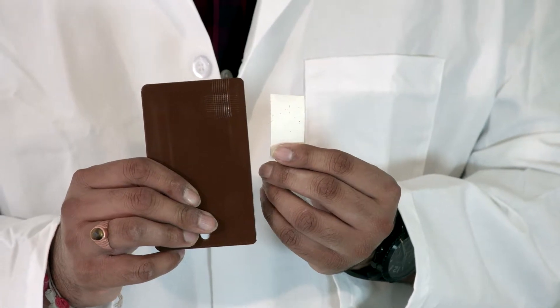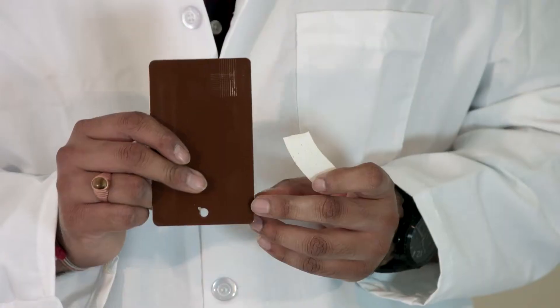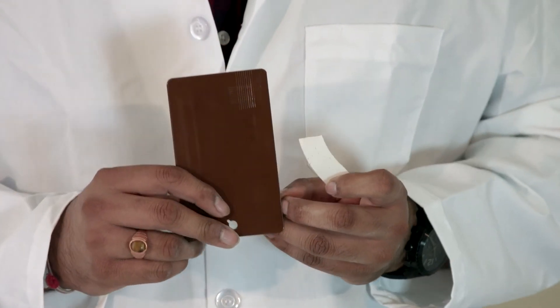If any of the powder comes off with the tape, that means there is poor adhesion and there is contamination on the substrate. This passed the adhesion test. That means there is good adhesion between the coating surface and the substrate.